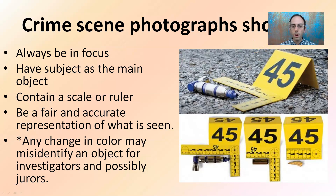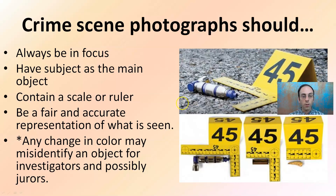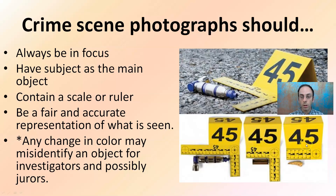What should crime scene photographs contain? As we can see in the images here, they should always be in focus. We need to make sure the subject is the main object within the photograph. They must also contain a scale or ruler. As we can see in these images, while they are listed as 45, they all contain a nice scale allowing us to know the exact size of that object, and also number-tagging it, which is great for organization purposes.